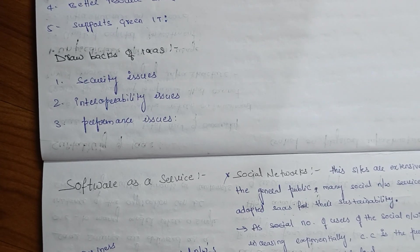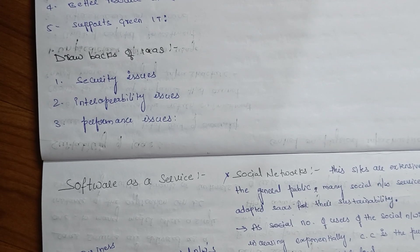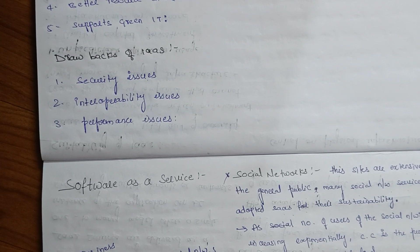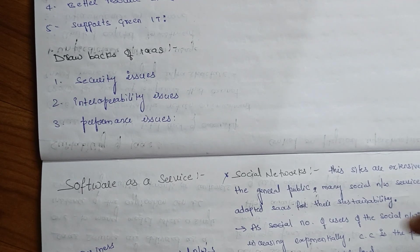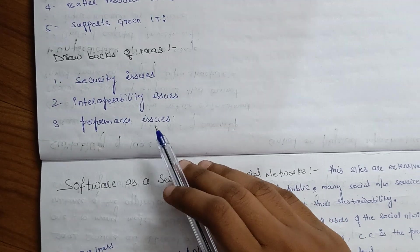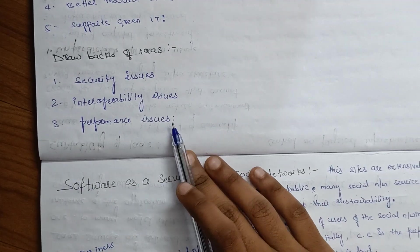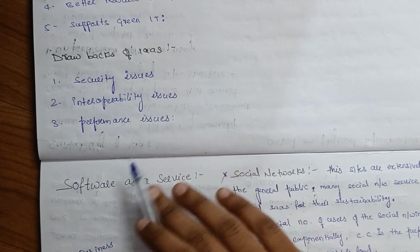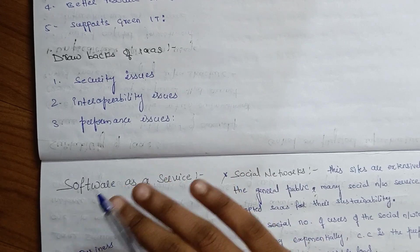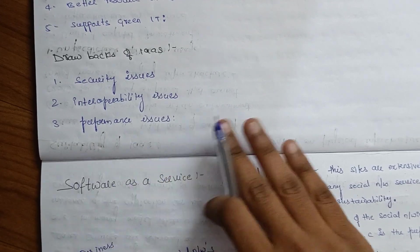Other issues include interoperability issues and performance issues. In terms of performance, the IaaS infrastructure model may not always deliver perfect performance.